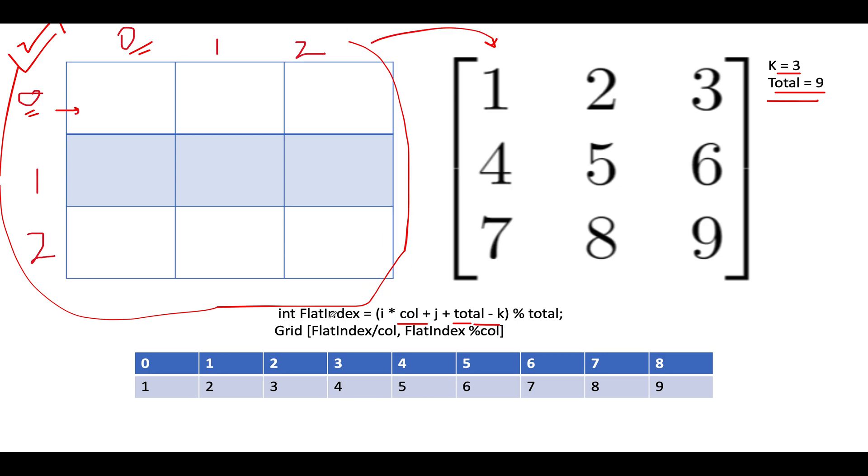So let's try and identify the flat index for the value 0, 0 what that would be equal to. So this is 0, this is 3 plus 0. So this gives me 0 plus 0. And here the total is 9. So 9 minus k gives you 6. That means the flat index that I should refer to should be 6.